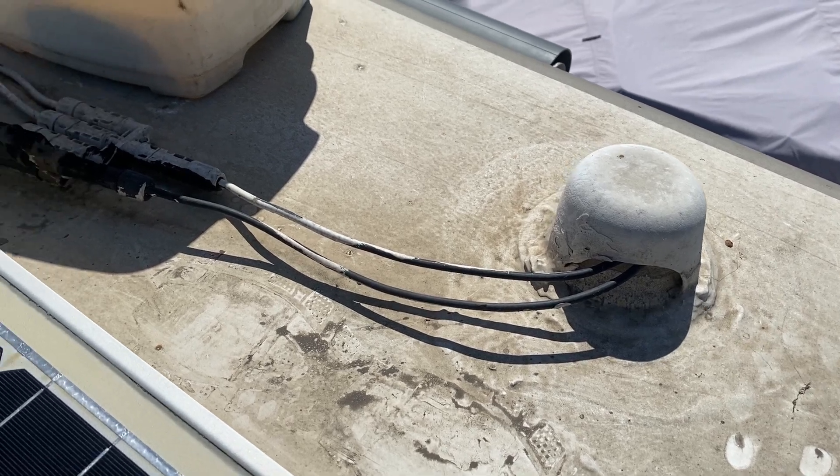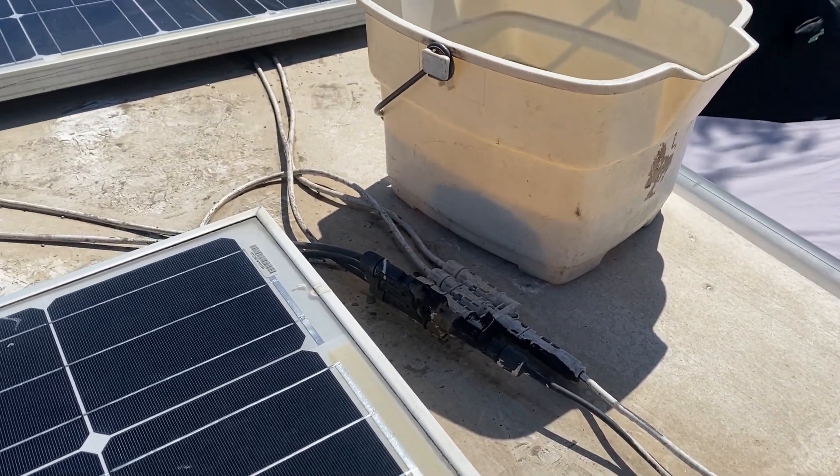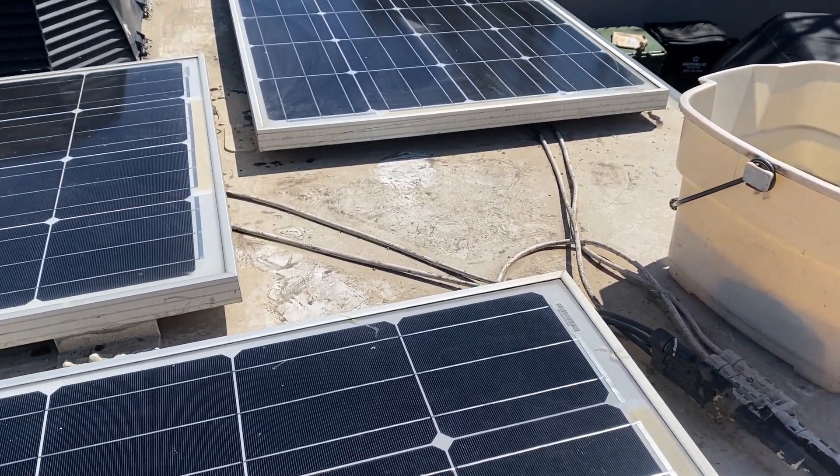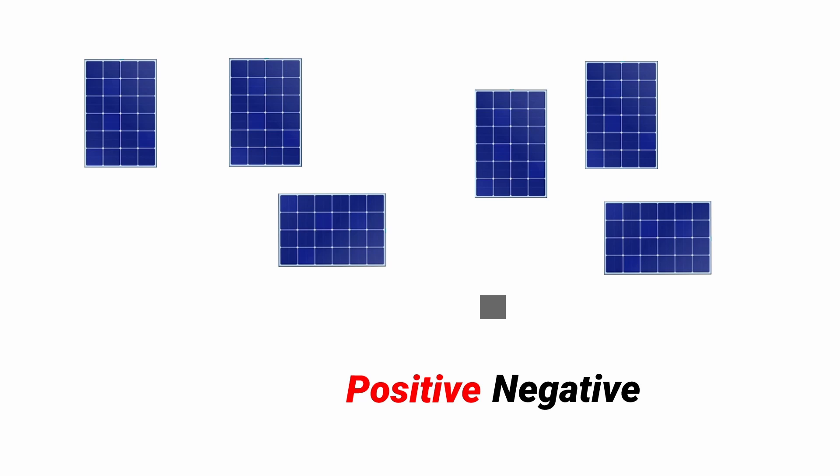This may be confusing for beginners so I'll go over the differences. For my client his panels are connected in parallel. This works fine for three panels but to add more panels we will need to be installing them in series and parallel. This is what my client's RV roof looks like. The gray square is a wire gland where the wires enter the RV.